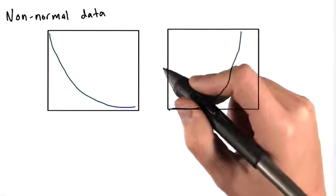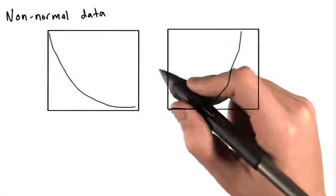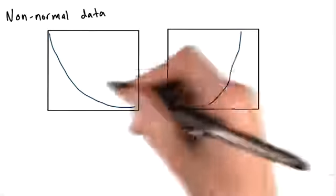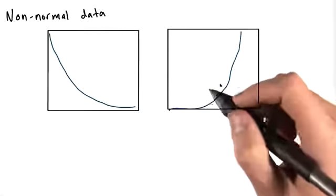In the wild, you'll often encounter probability distributions that are distinctly non-normal. They might look like this, or like this, or completely different.